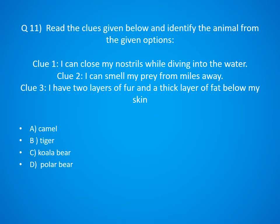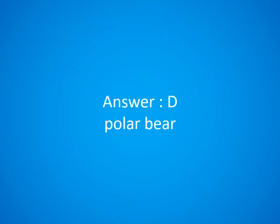Question 11. Read the clues given below and identify the animal. Clue 1: I can close my nostrils while diving into the water. Clue 2: I can smell my prey from miles away. Clue 3: I have two layers of fur and a thick layer of fat below my skin. A. Camel. The answer is Option D. Polar bear.